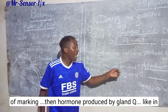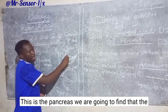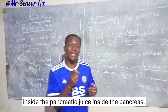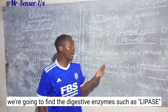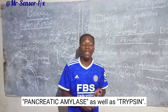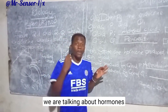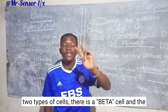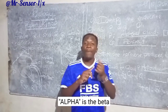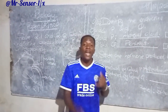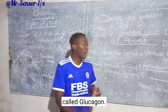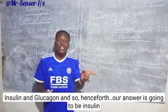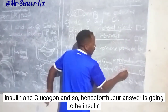Then hormone produced by gland Q. The pancreas can contain pancreatic juice. Inside the pancreatic juice we find digestive enzymes such as lipase, pancreatic amylase, and trypsin. But we are not talking about enzymes — instead we are talking about hormones. The pancreas contains two types of cells: the beta cells and the alpha cells. The beta cells secrete a hormone called insulin. The alpha cells secrete a hormone called glucagon. So the hormone produced by gland Q is insulin.